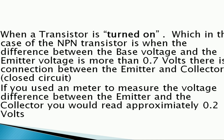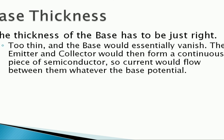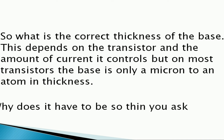The base thickness: the thickness of the base has to be just right. If very thin, the base would essentially vanish — the emitter and collector would then form a continuous piece of semiconductor, so current would flow between them whatever the base potential is. If very thick, electrons entering the base from the emitter wouldn't reach the collector as it would be too far away, so all current would flow between the emitter and the base with no collector current. On most transistors the base is only a micron to an atom in thickness — very thin.